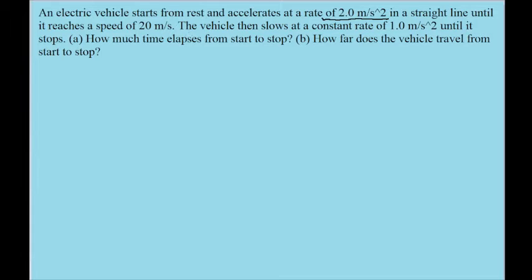After that, the vehicle will start slowing down at another constant acceleration, this time of 1 meter per second squared. Notice that for both accelerations, the accelerations are given as constant. This means that we will get to use our kinematics equations, our equations for constant acceleration, to solve this problem.